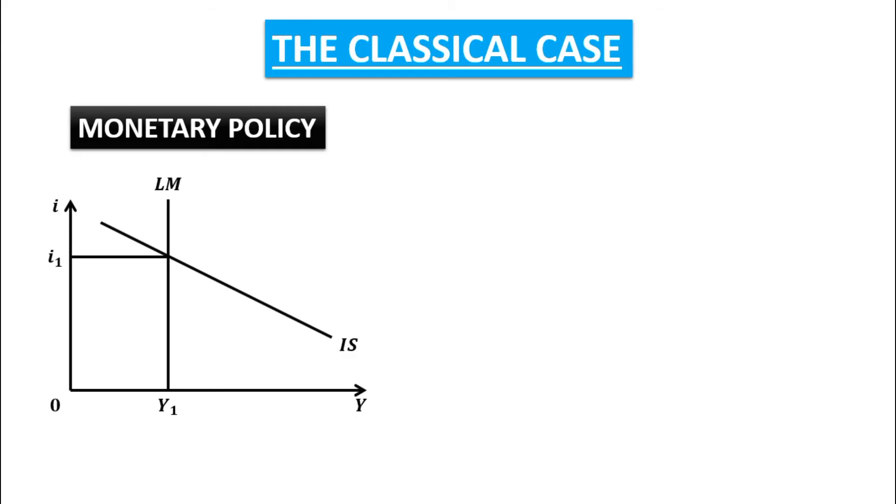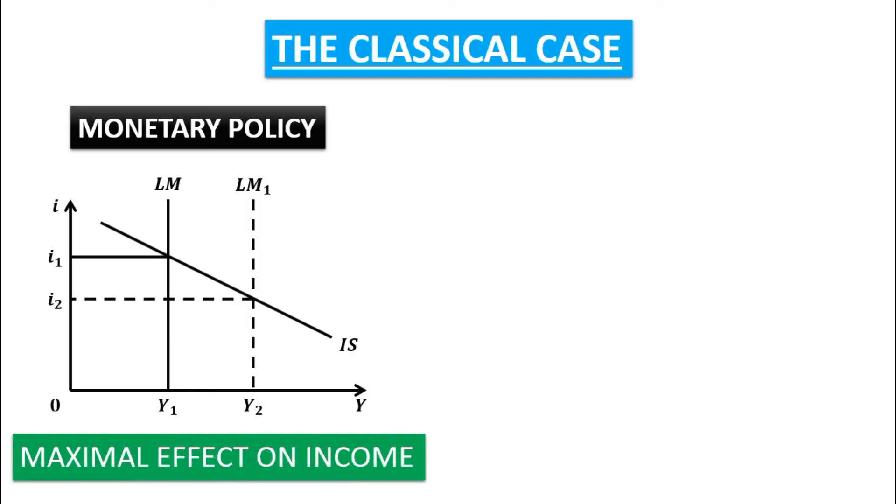As you can see, LM curve has been shifted towards right to LM1, and the new equilibrium interest rate is OI2, new equilibrium output is OY2. So I can say that maximal effect on income. Maximal effect on income is at maximal effect on income.